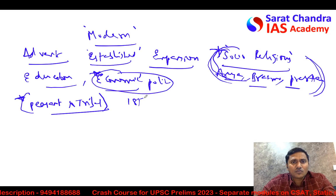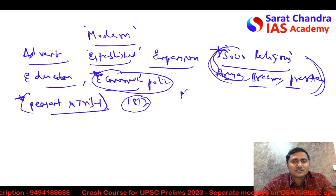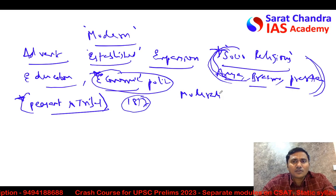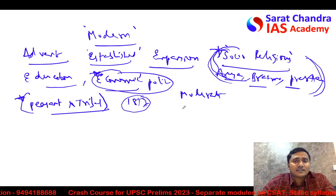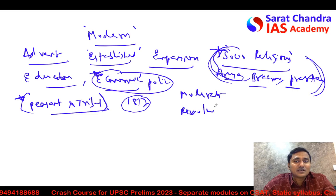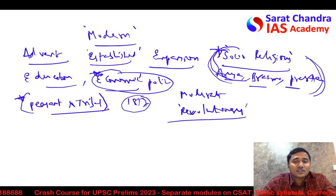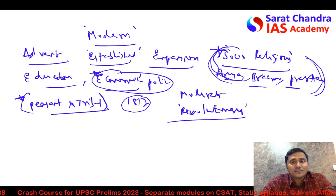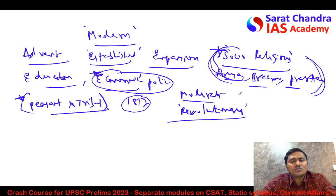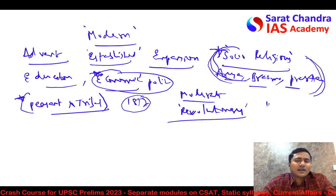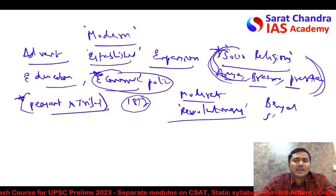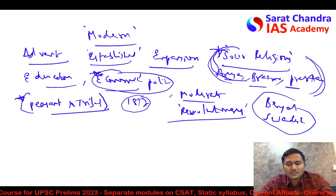The 1857 revolt is important. Among the different phases, the moderate phase is important, then the extremists and revolutionaries. In the last four to five years, there were questions on revolutionary movements and revolutionary organizations in India — their main agenda and the methods they followed. Then the Bengal Partition, the Swadeshi movement — questions are standard on these aspects.